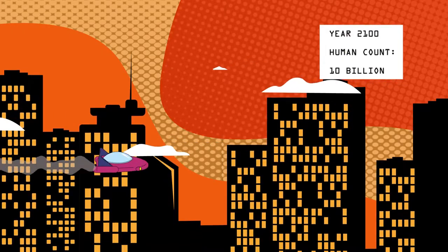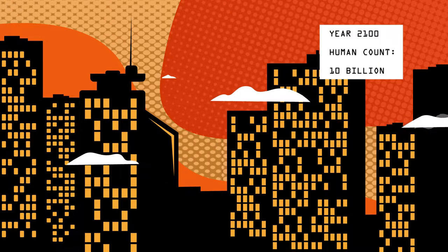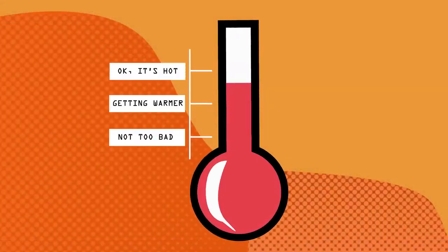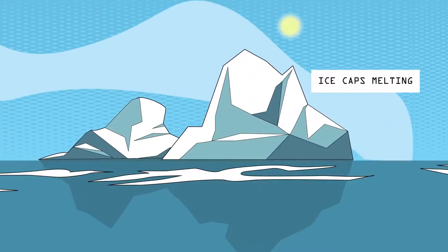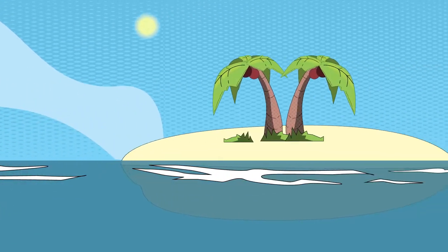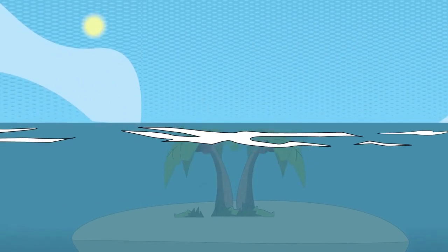The year is 2100. Human population has reached 10 billion. As temperature rises and ice caps continue to melt, rising sea levels have caused huge swathes of land to be permanently underwater.